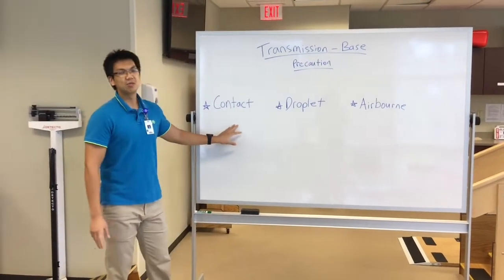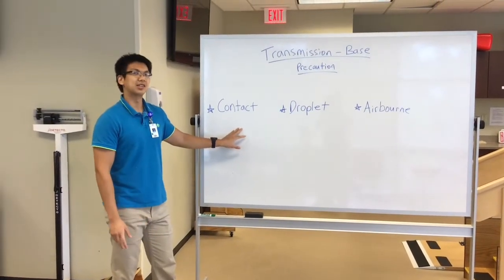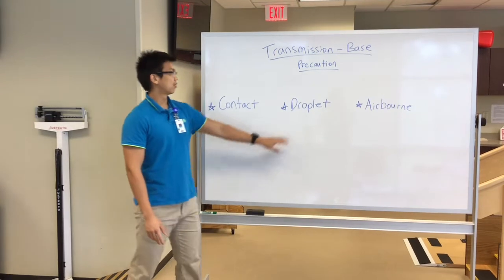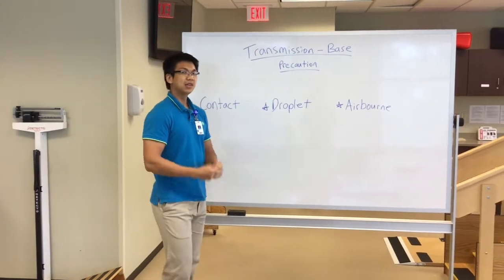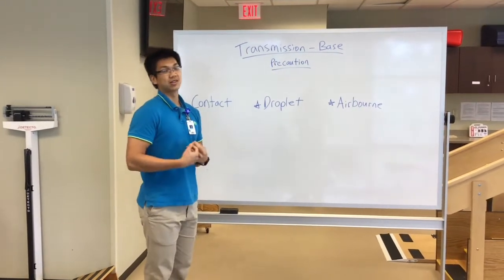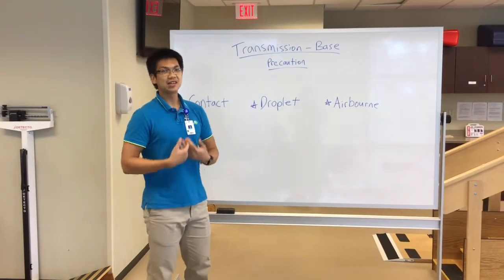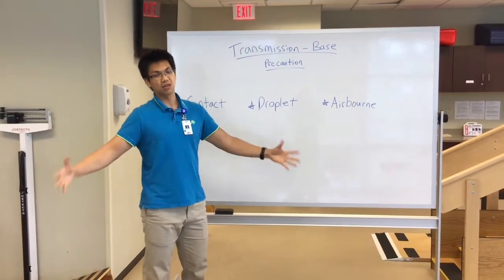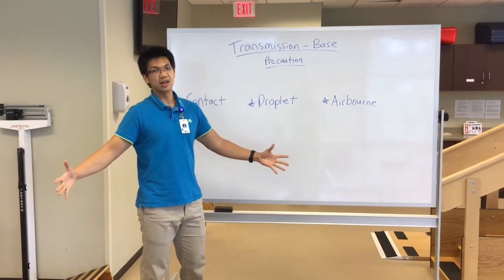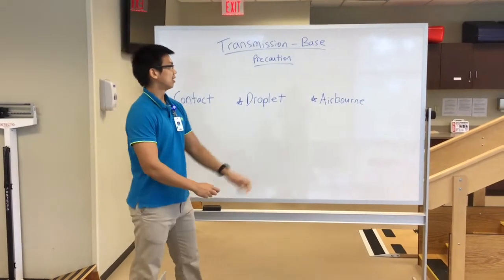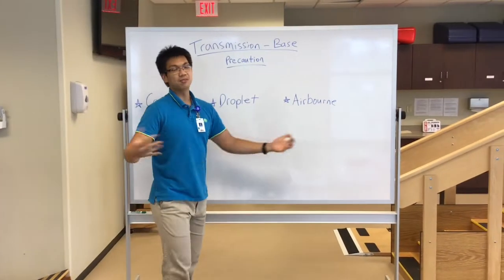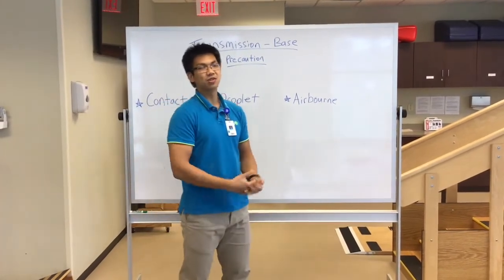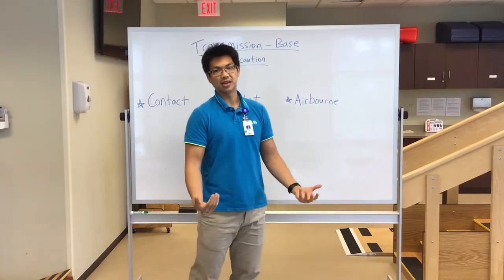Contact: basically, you want to be careful about touching the patient. For droplet: typically, there are going to be sprays — so they're going to be coughing or spitting — and it's typically within three feet of the patient. Now airborne: that's going to be everywhere. As soon as you enter the room, you're already exposed to that.